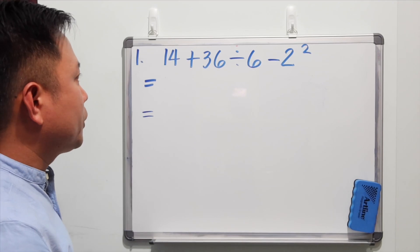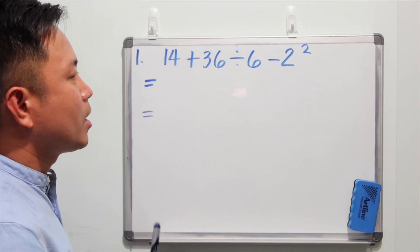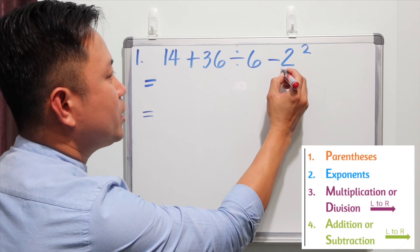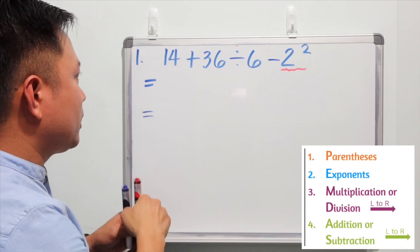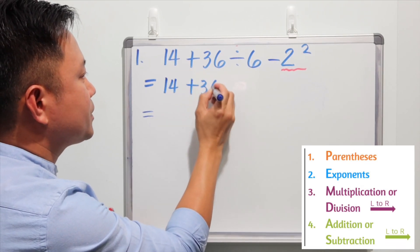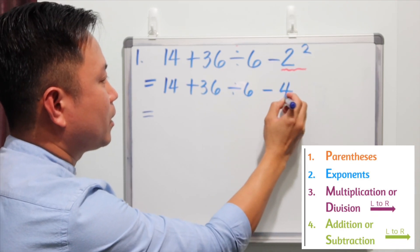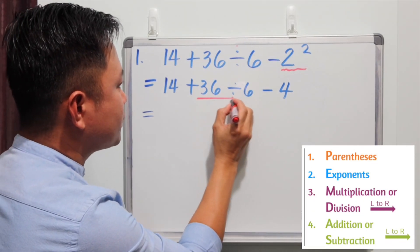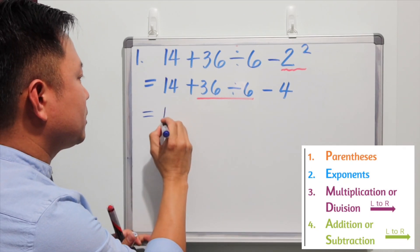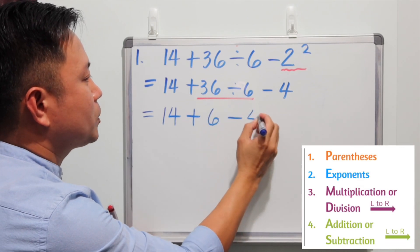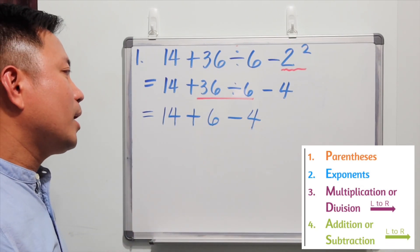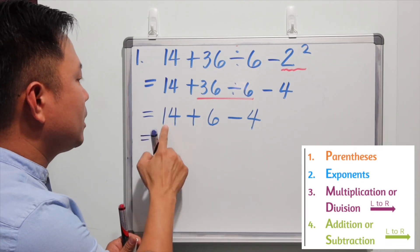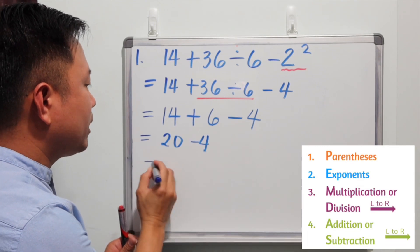Example number one: 14 plus 36 divided by 6 minus 2 squared. In this expression there is no grouping symbol, so we move on to the exponents. 2 squared gives us 4, so we write 14 plus 36 divided by 6 minus 4. Next, we do division: 36 divided by 6 gives 6, so we have 14 plus 6 minus 4. Simplifying from left to right: 14 plus 6 is 20, take away 4, gives us 16.